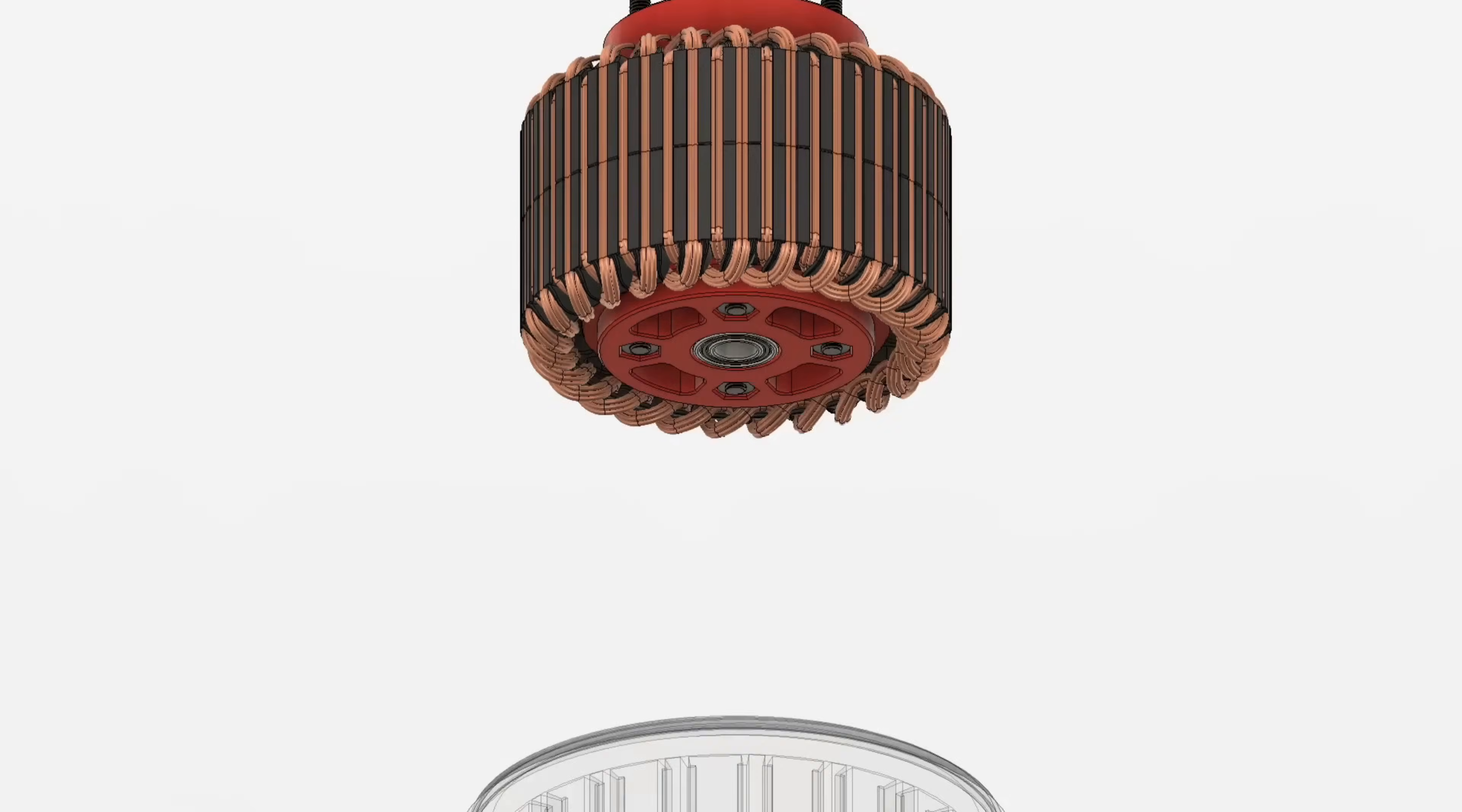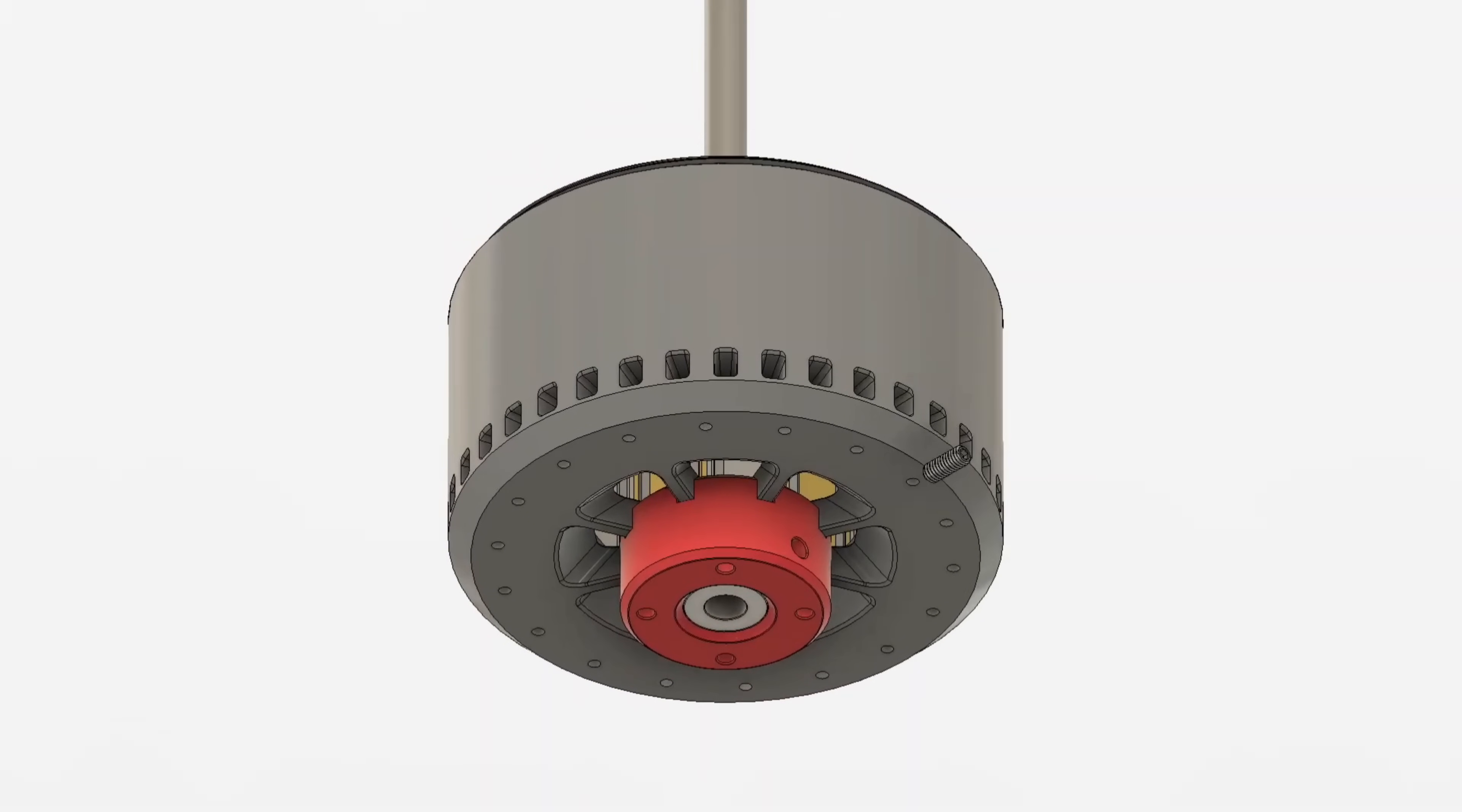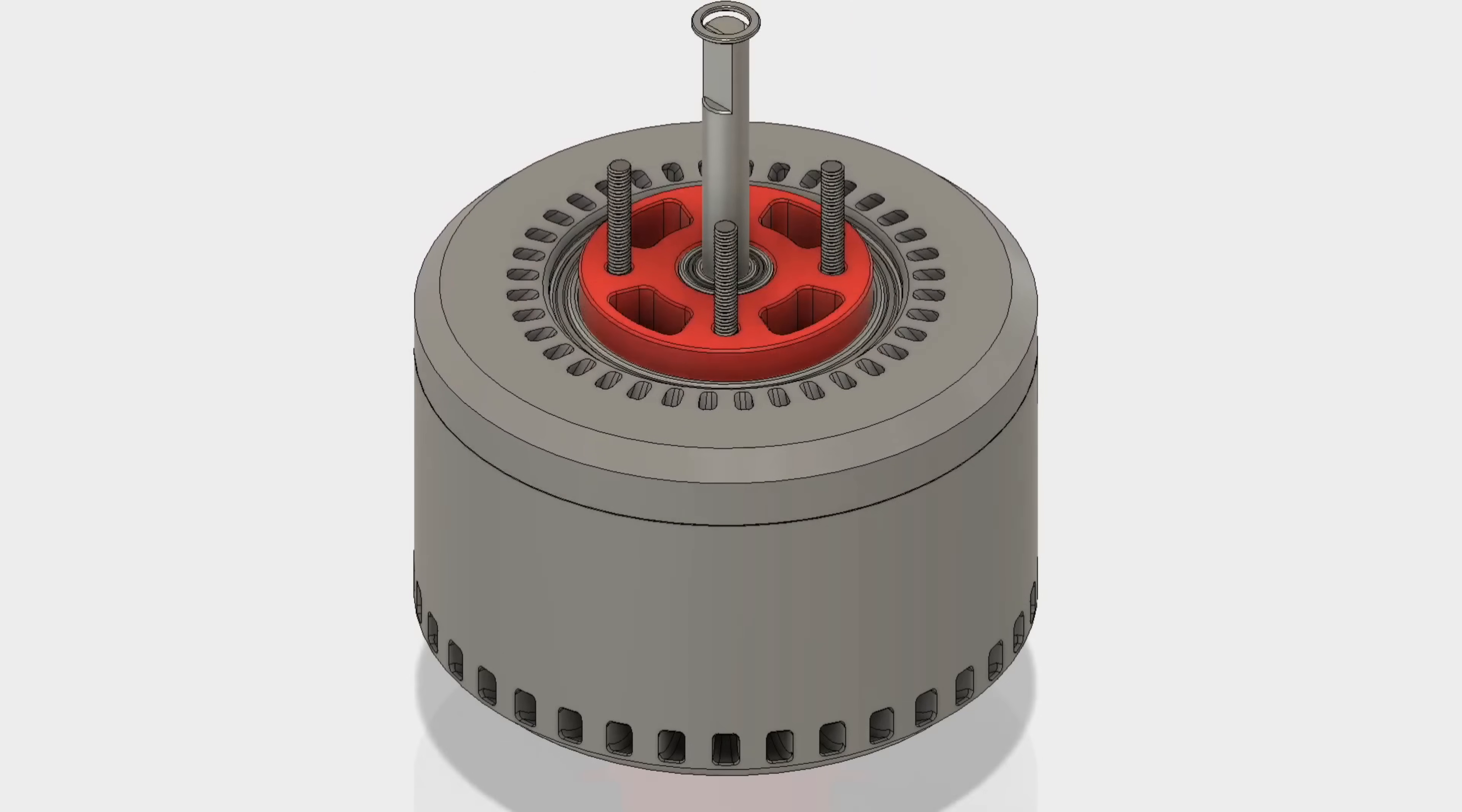The modularity of these coils also lends itself to new types of distributed generator arrays. Imagine wind or water turbines distributed across the landscape, each with its own built-in micro-generator. The electricity they produce could power local communities and infrastructure off-grid without transmission losses. After storms or disasters, populations could get power back online faster through these resilient micro-grids.